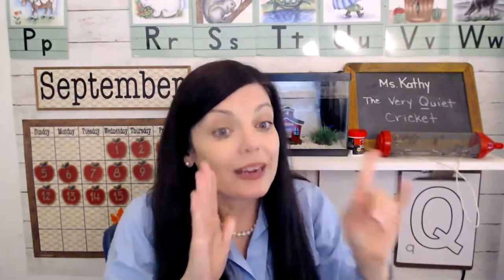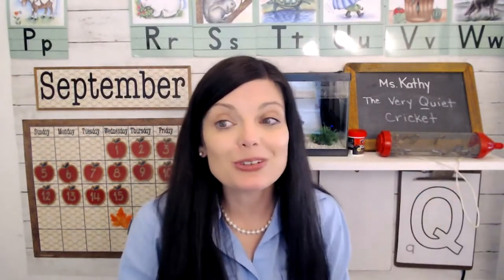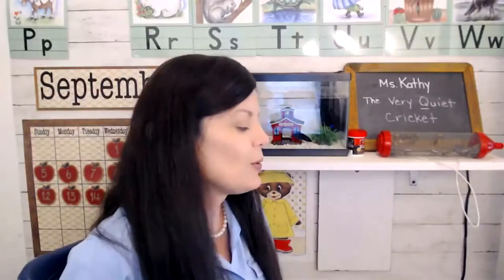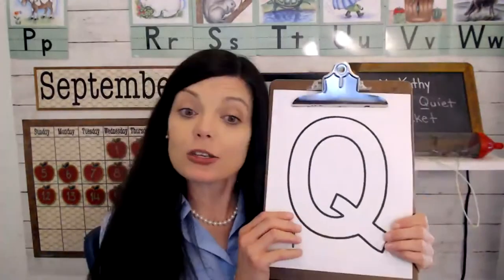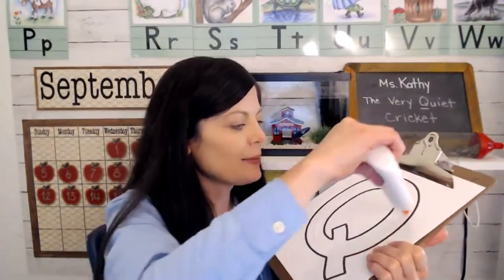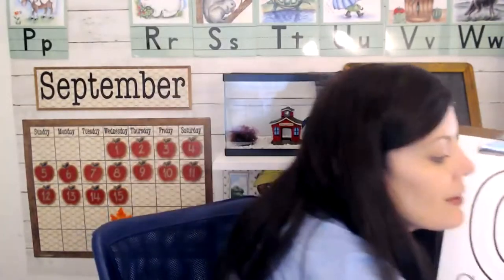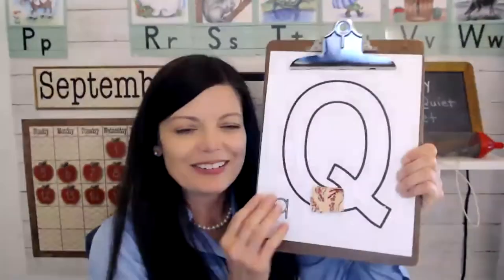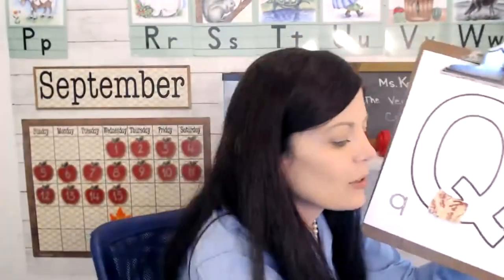Q is for quail — that's a type of bird — but that's not what we're going to talk about today. We're going to talk about the very quiet cricket, although these crickets are not very quiet at all, so you'll hear them chirping all during our class. Let's decorate the letter Q, and Q is also for quilts. That's how I'm going to decorate my Q. I'm going to put some little fabric squares on my letter Q and make it look like a quilt.